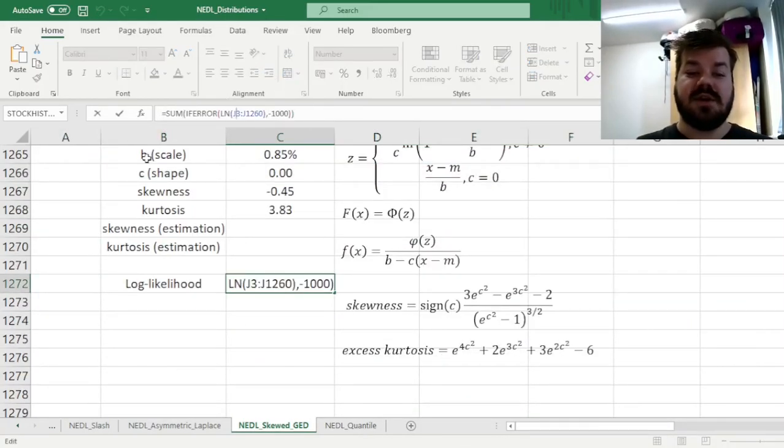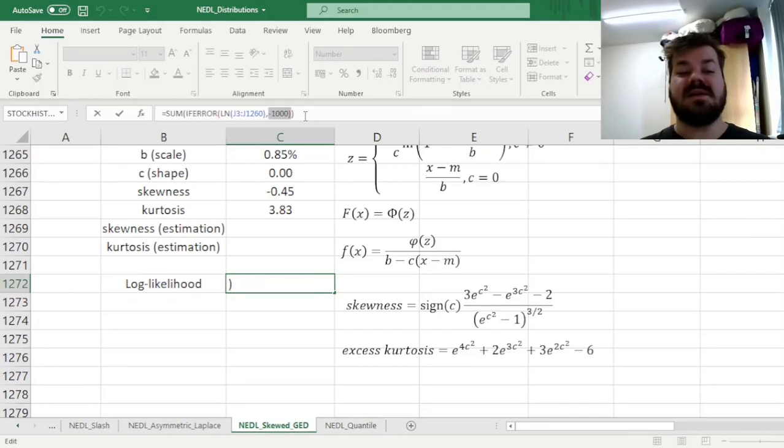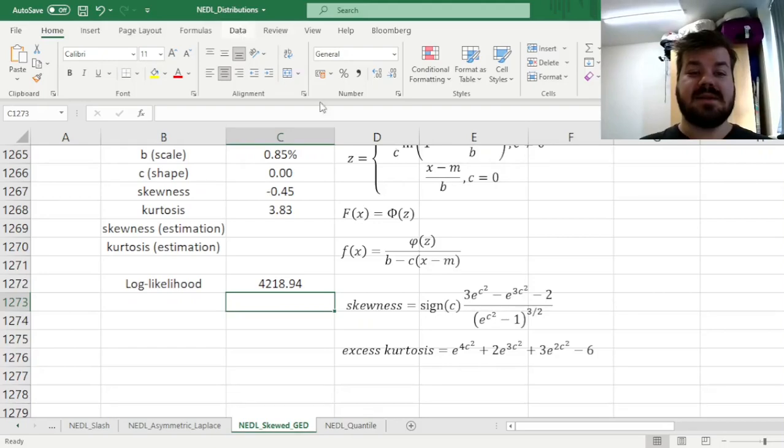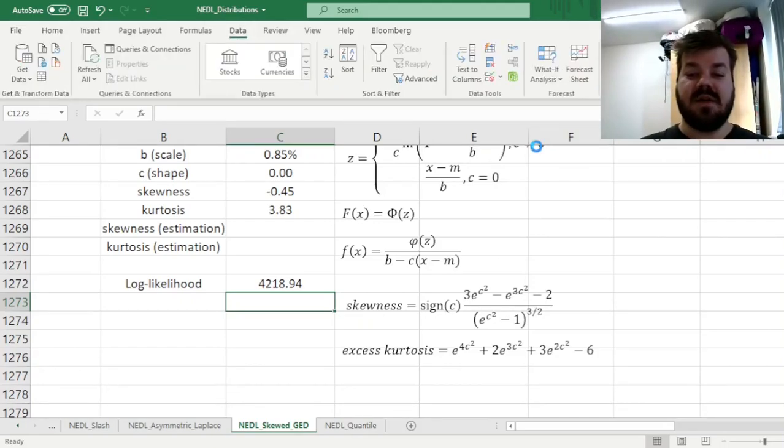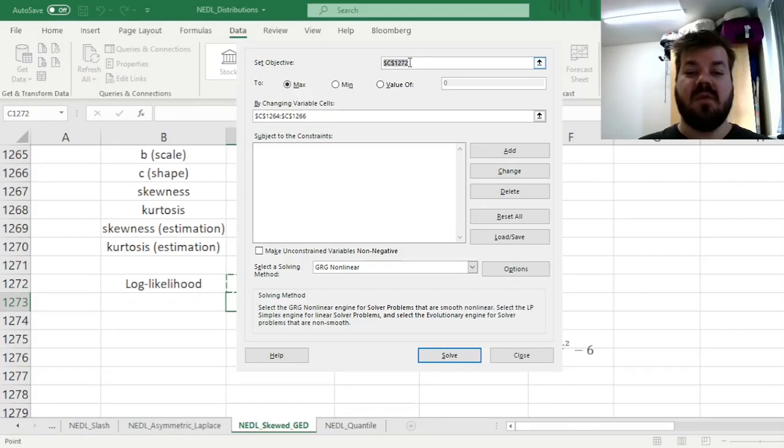And then we'll be able to calculate the log-likelihood function. And this log-likelihood function just sums the logarithms of probability density functions in column J, and to ease the convergence of the algorithm to the optimal values, we use the IFERROR function, so if some value returns an error, so a probability density function of 0, or a negative value, then we just return minus 1000, so the algorithm knows we don't want it to venture there. And now let's go to data solver, and specify our task.